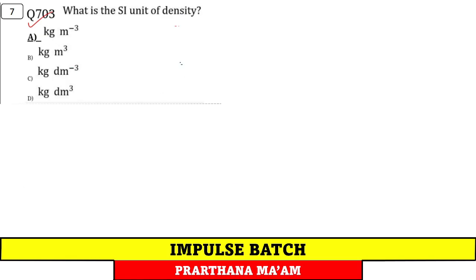Question number 7. SI unit of density. Density is mass upon volume. Mass is kg, volume's SI unit is meter cube. So kg per meter cube, option A.